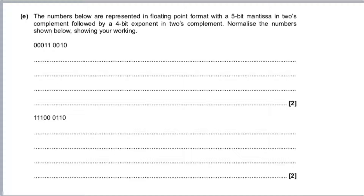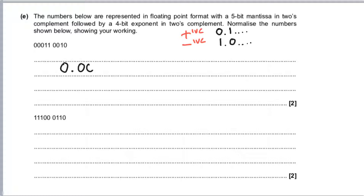We are now doing one of the final kinds of questions we can get, which is how we normalise a number. As a quick recap, normalising a number in this context depends on whether it's positive or negative. If it's a positive number, we need to make it 0.1 and then something. If it's negative, we have to make it 1.0 and something. Looking briefly at these questions, this number is going to be positive, and the one at the bottom is going to be negative.